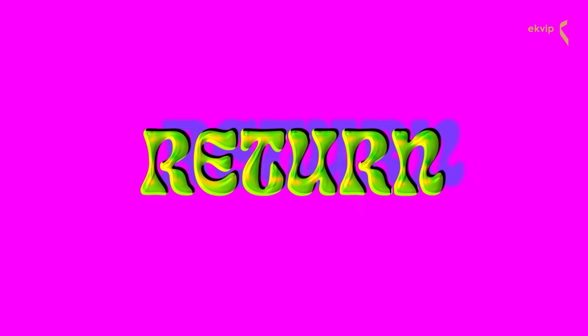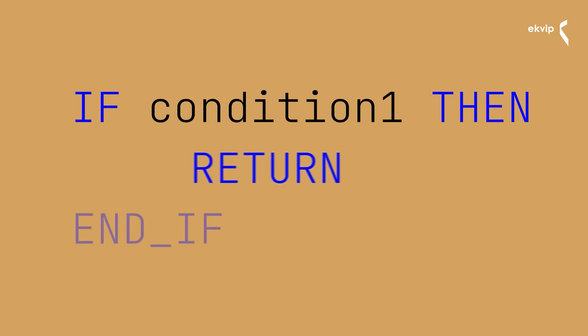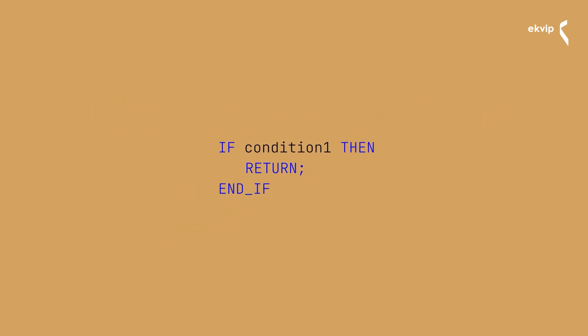Next, let's talk about the RETURN instruction. The RETURN instruction is used to exit a function block. The RETURN instruction can be dependent on a condition. Let's take a look at the syntax: IF condition1 THEN — RETURN — END_IF. In code you could use the RETURN instruction like this: a RETURN instruction depending upon a condition, followed by a code block.